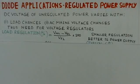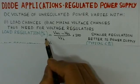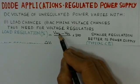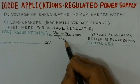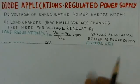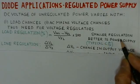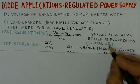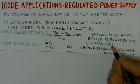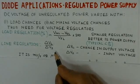We define a parameter called load regulation. The percentage load regulation is defined as: voltage at no load minus voltage at full load, divided by the full load voltage, multiplied by 100. If the load regulation is smaller, it is better. Typical values of load regulation are less than one percent.